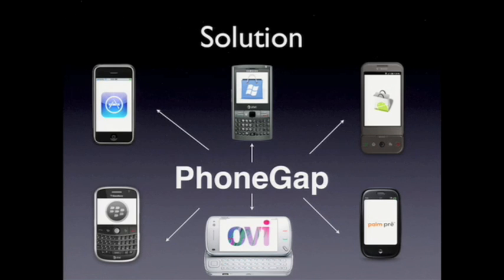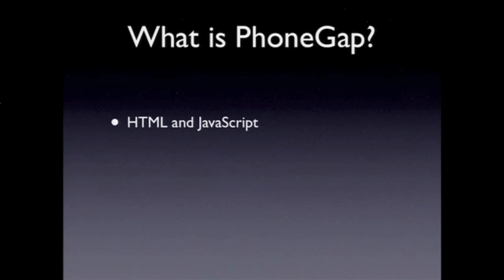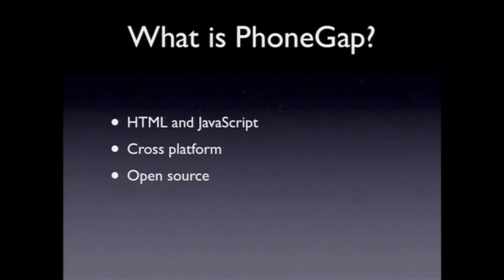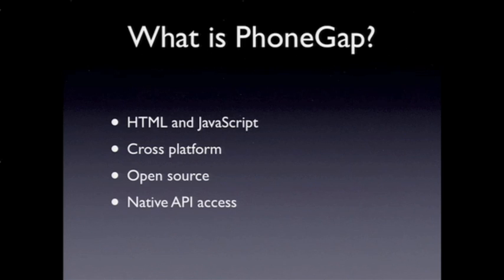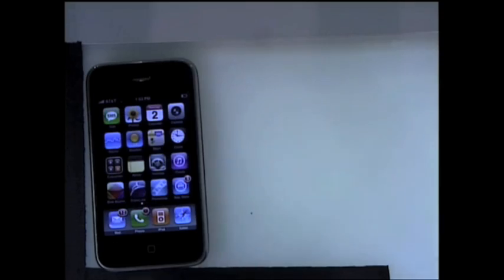PhoneGap kind of bridges this gap, and we write once. The cool thing is we write in HTML and JavaScript — we're using open web technologies and open standards. PhoneGap is an HTML and JavaScript development framework. It's cross-platform, runs on iPhone and Android today. It's open source, MIT license, and you can download the code today on GitHub or Google Code. And it has native API access.